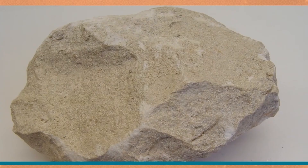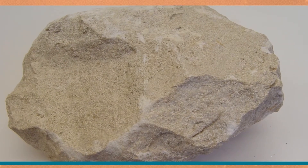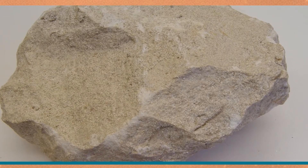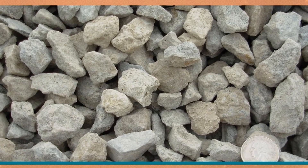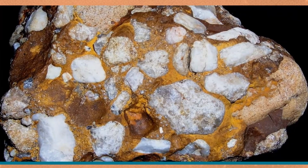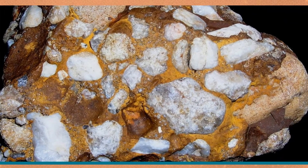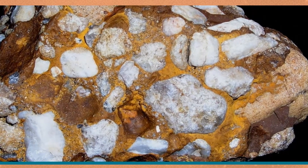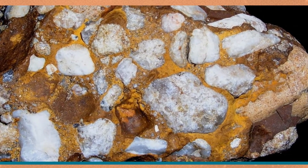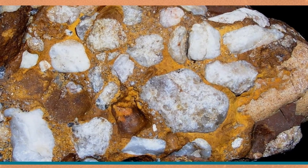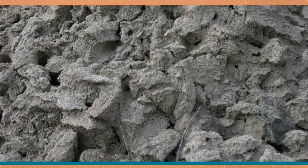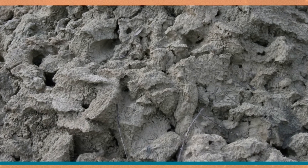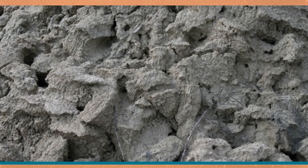Limestone is formed from tiny pieces of shells of dead sea animals that get compressed. Most limestone is crushed and used as a construction material. Conglomerate contains sand and rounded pebbles that have been cemented together, and is used as construction material and also polished to make ornaments. Shale is formed from mud or clay that has been pressed together. Shales can be crushed and mixed with water to produce clays that can be made into a variety of useful objects.